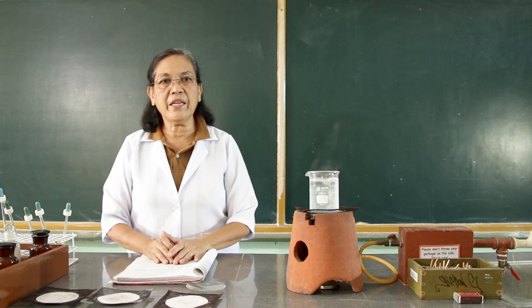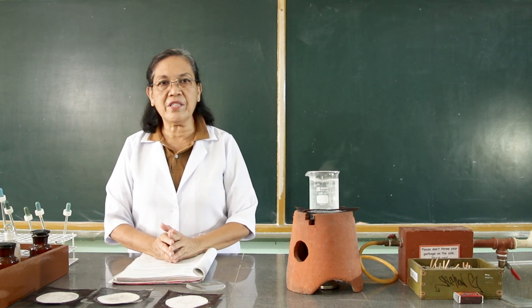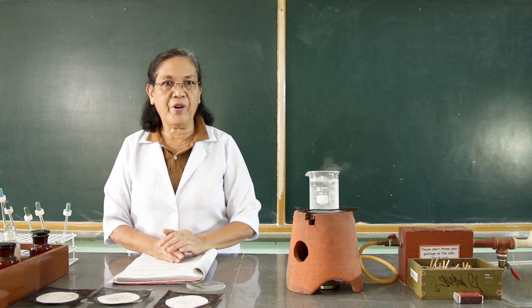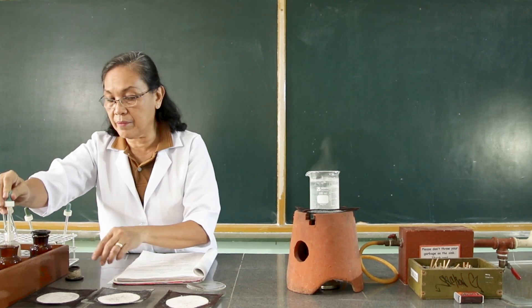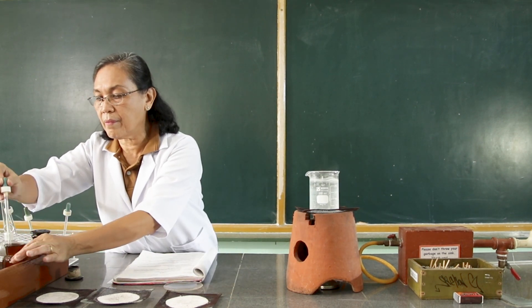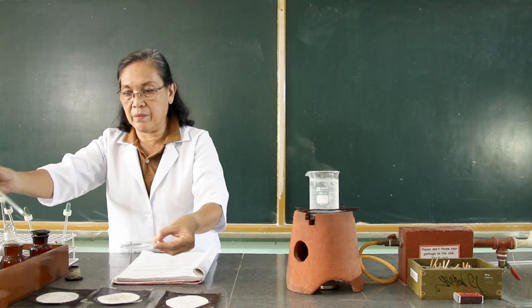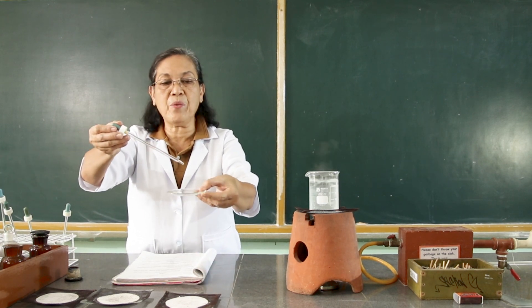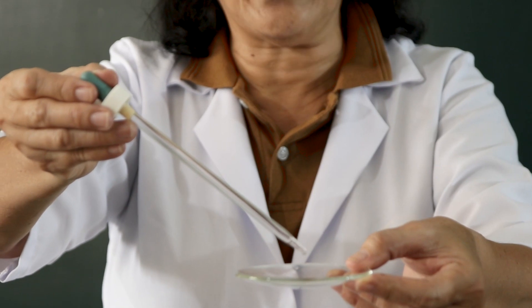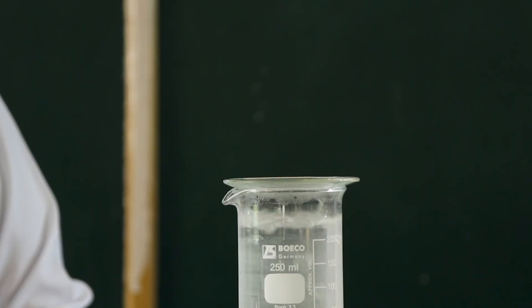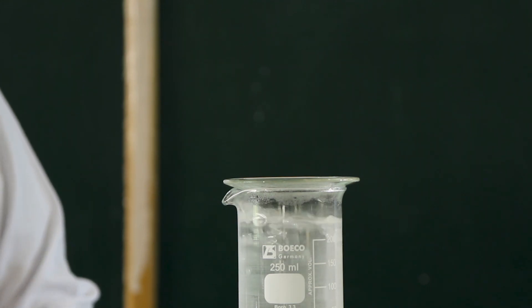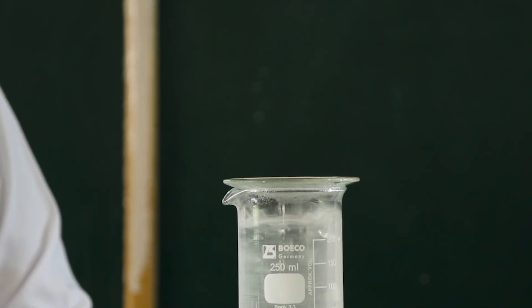We will evaporate a drop of the ammonium hydroxide. We will place one drop of ammonium hydroxide into this watch glass and evaporate it over the water bath. We will let it evaporate for 15 minutes.